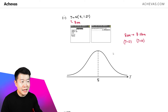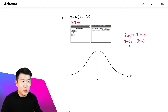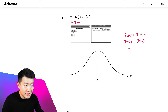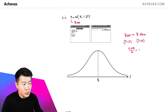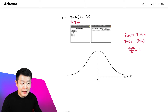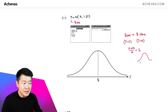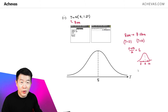We are supposed to be marking 0 and 10 on the graph. One thing we need to realize is that (0 + 10) / 2 = 5, which is the center of the entire bell curve. This means that 0 and 10 should be the same distance away from the center of the bell curve.